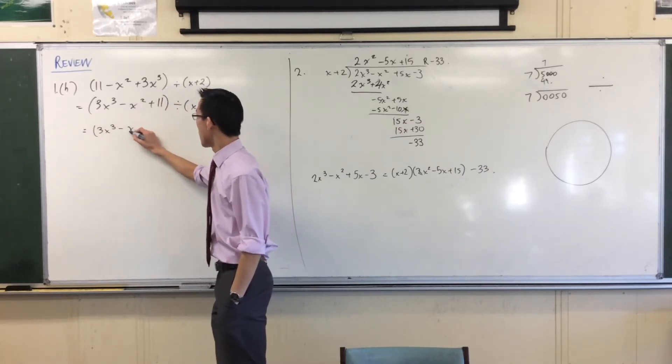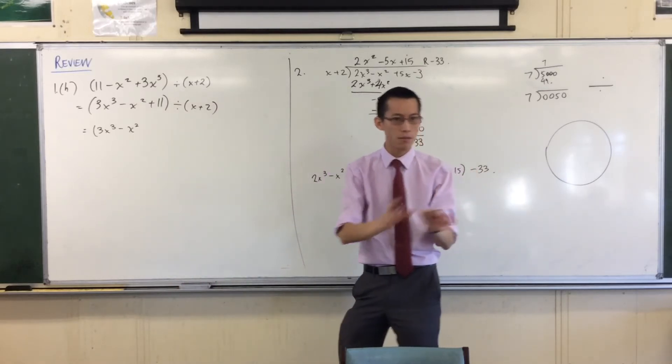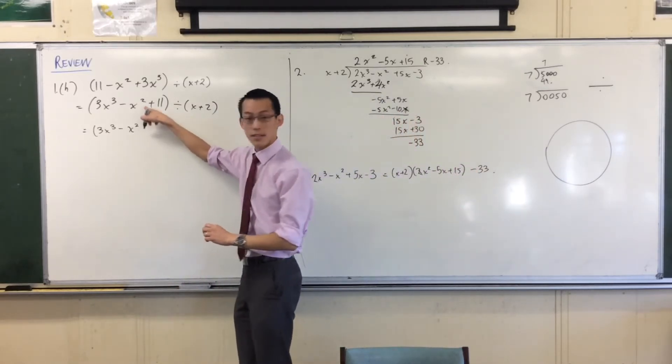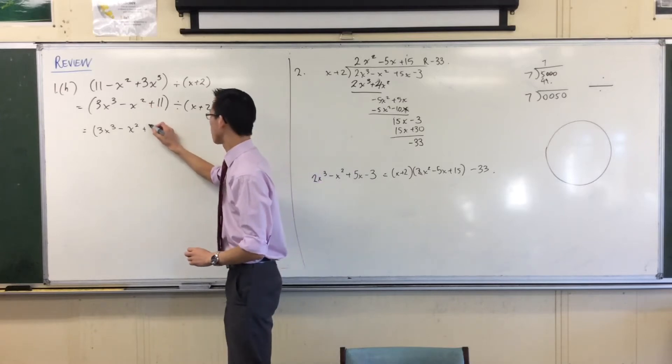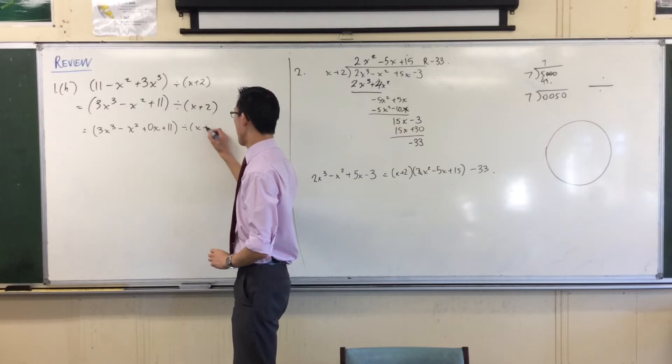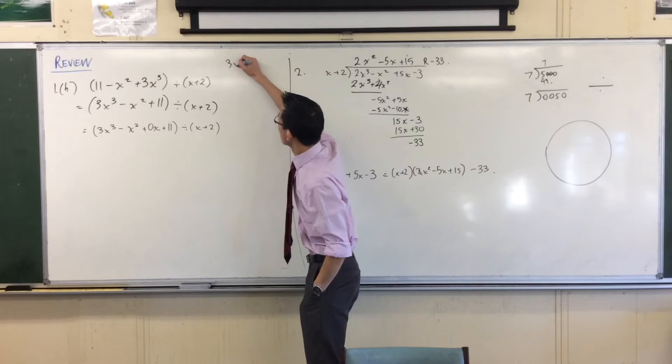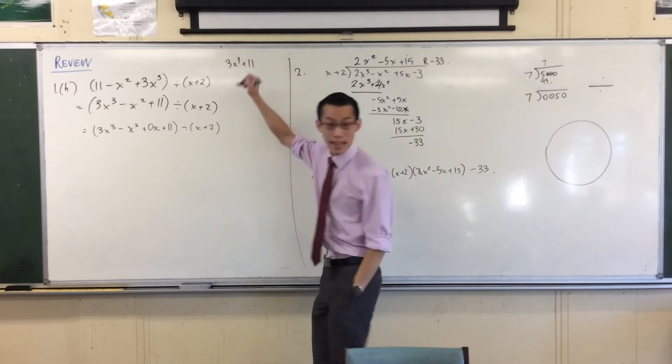So I've got 3x cubed minus x squared. And I'm just going down, I'm looking at the powers. I'm making sure I don't miss any. So there's a 0x missing in here, plus 11.